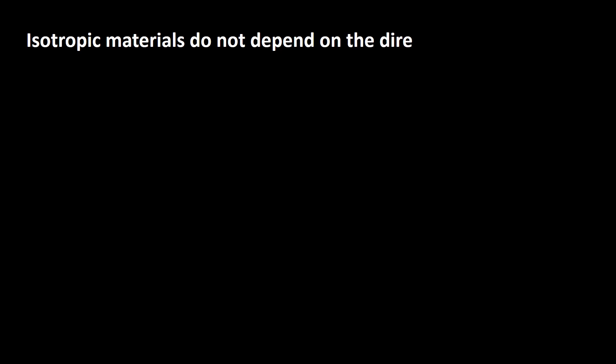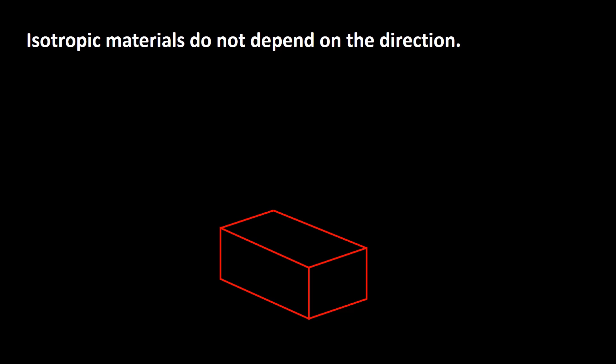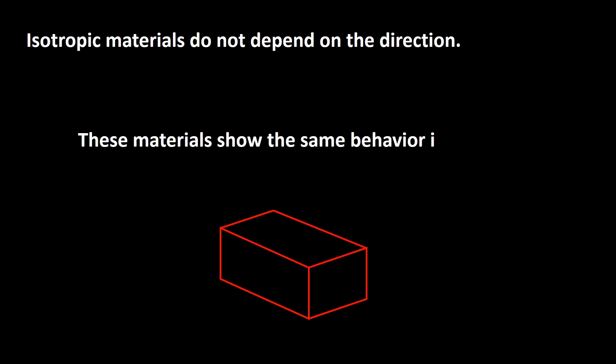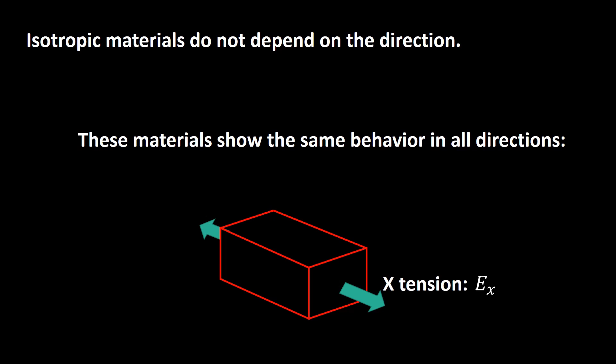Welcome to this video. Usually we work with isotropic materials. An isotropic material behavior does not depend on the direction — in other words, the material behavior and constants are exactly the same in all directions. For example, applying tension in X, Y, and Z directions have the same result, and we can conclude that moduli are the same for all directions. Elastic constants like Poisson's ratio and shear modulus are also the same for all directions.